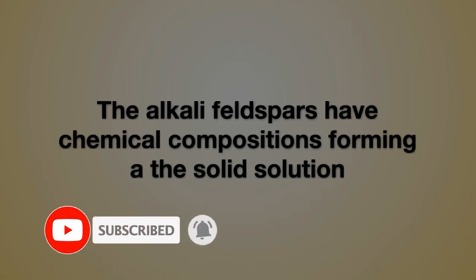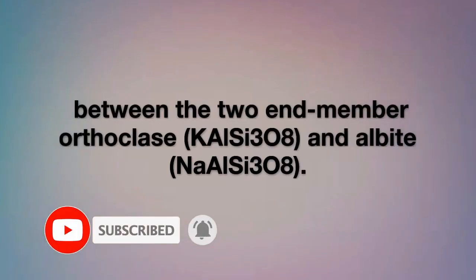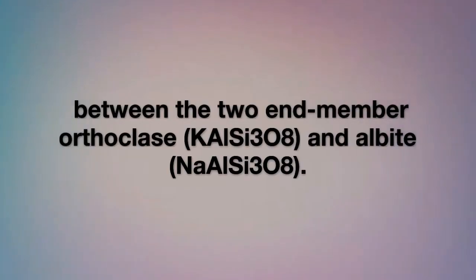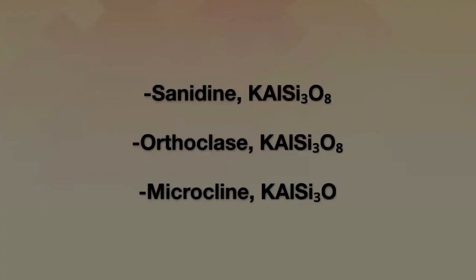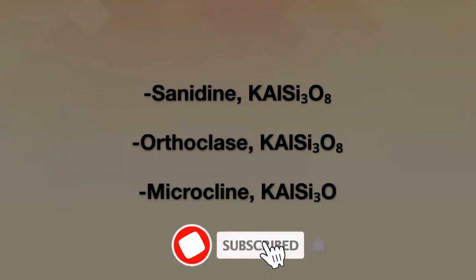The alkali feldspars have chemical compositions that form a solid solution, principally between the two end-member compositions: orthoclase (KAlSi₃O₈) and albite (NaAlSi₃O₈). Alkali feldspars, or potassium feldspars, have three components: sanidine (KAlSi₃O₈), orthoclase (KAlSi₃O₈), and microcline (KAlSi₃O₈).